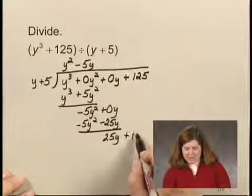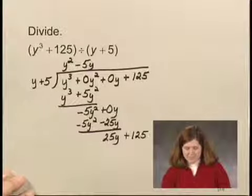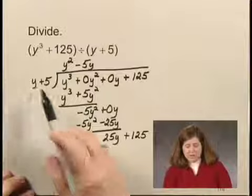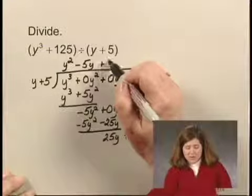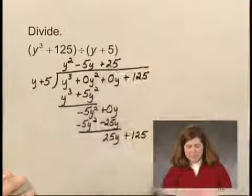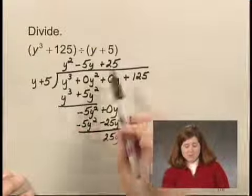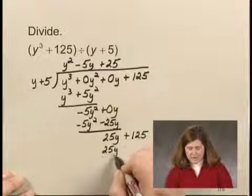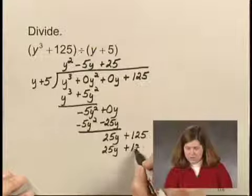And we bring down the next term, 125. And we think 25y divided by y is 25, and I write that in the quotient. And finally, I multiply 25 times y plus 5, and I have 25y plus 125.